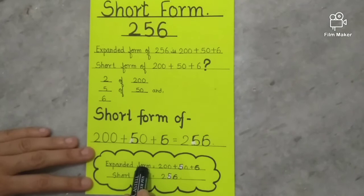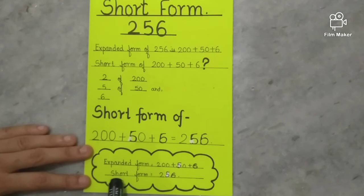Expanded form of 256 is 200 plus 50 plus 6, and 256 is the short form. I hope you understand it well.